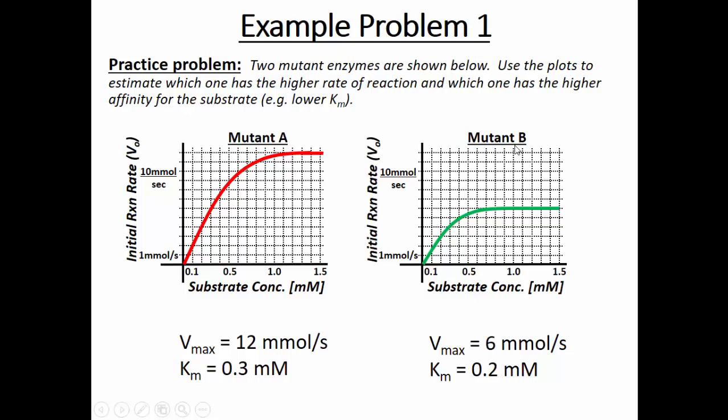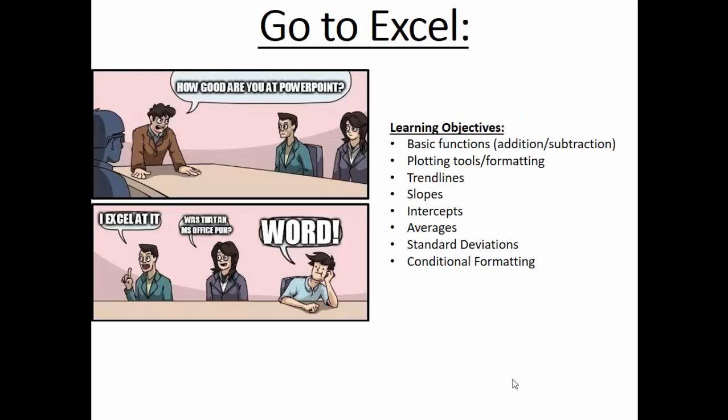For mutant B, the approach is the same: see where the curve plateaus — at about 6 mmol per second — then take half of that (3), go over to the curve and down to the X-axis, giving Km equals 0.2 mmol. If I were to choose between these two mutants for a process, mutant A is going to be the better choice because it gives that higher Vmax. I don't necessarily care too much about Km in this case — I want the higher maximum rate of reaction because that means mutant A is kicking out more product per unit time. This is pretty similar to something I might put on a test — I might give you a picture like this and ask you to visually estimate Vmax and Km.